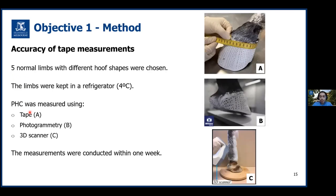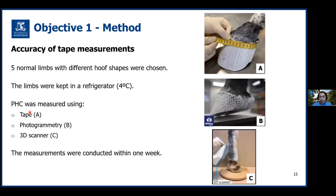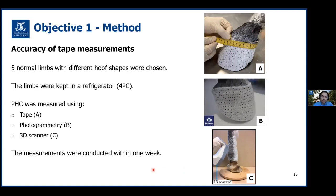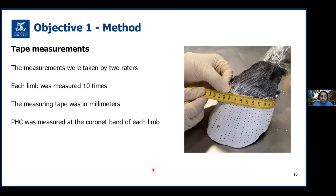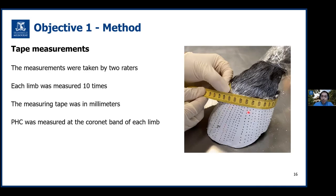To compare the accuracy of the tape with photogrammetry and the 3D scanner, five forelimbs were collected from five adult horses. The limbs had normal hoof conformation and were kept in a refrigerator at four degrees Celsius during the test period. PHC was measured using tape, photogrammetry, and 3D scanner. The measurements were conducted within one week to avoid tissue shrinkage by drying out. For tape measurements, measurements were taken by two raters. In each experiment, two raters repeated five PHC measurements on five limbs; the measuring tape was in millimeters and PHC was measured at the coronet band of each limb where the hoof wall meets the skin.